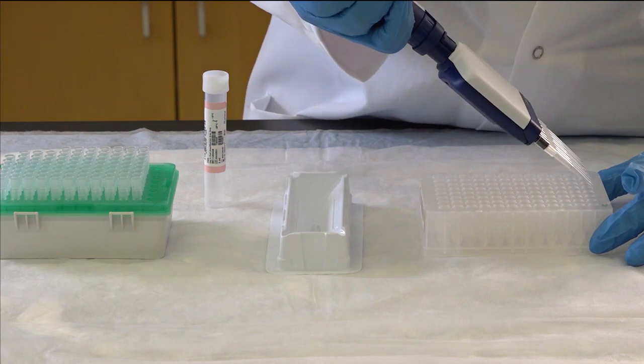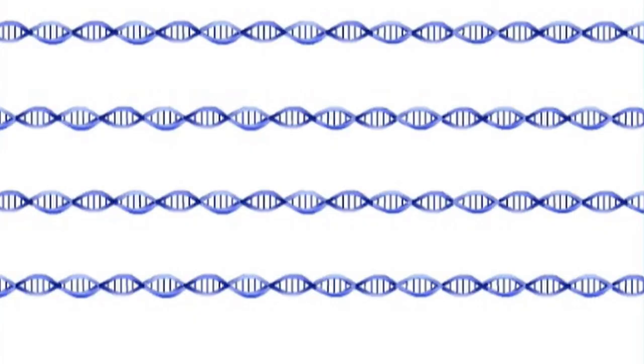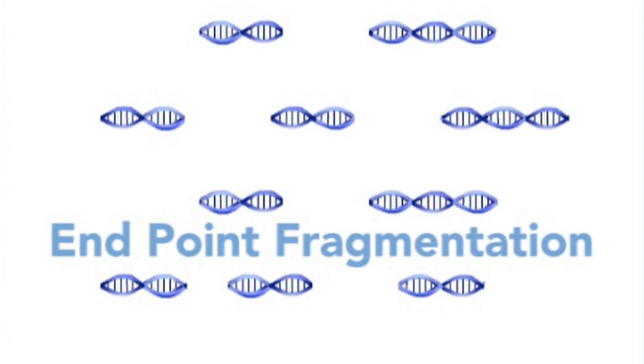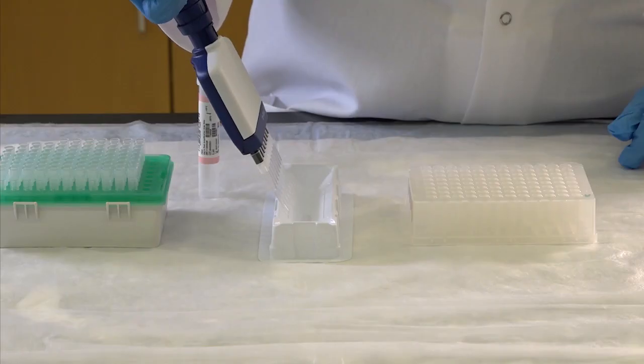This step fragments the DNA sample. The purpose is to cleave DNA into fragments of the optimal length for hybridization to an Illumina bead chip. This controlled enzymatic process cleaves DNA into segments of 300 to 600 base pairs. The process uses endpoint fragmentation, which is not as time sensitive as other methods, to avoid over-fragmenting the DNA sample.